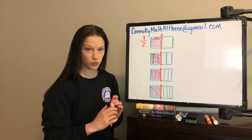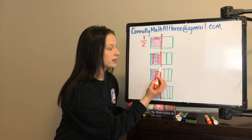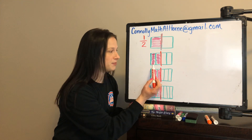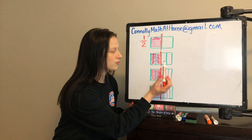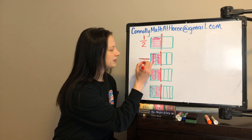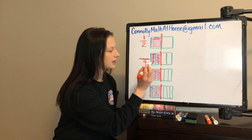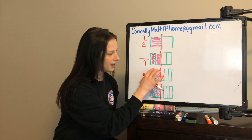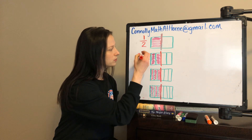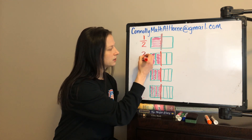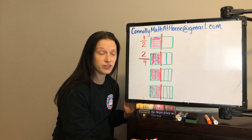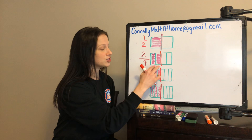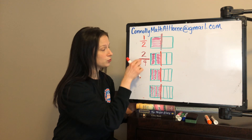I've labeled the first one for you: 1 half. When I look at the next one, I'm going to think about the total number of equal parts that I've made — 1, 2, 3, 4 — and that is my denominator. Then I'm going to think about how many are shaded in that's equivalent to 1 half: 1, 2. To show a fraction equivalent to 1 half with fourths, I've shaded in 2 fourths.